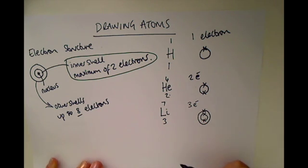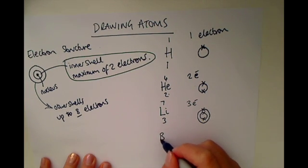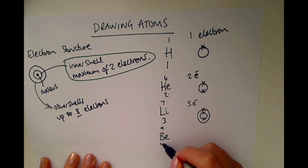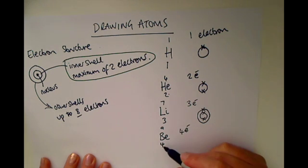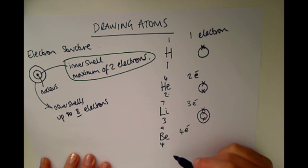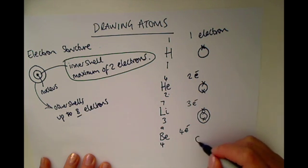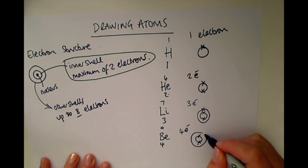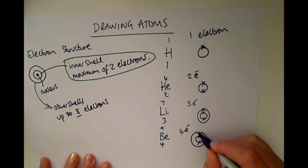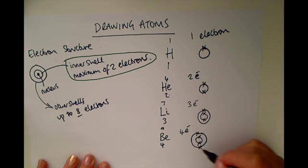If we draw the next atom up, we'd have beryllium. Beryllium is the next atom along the periodic table. It's got four electrons — we can tell that by the proton number, which is also the same number of electrons. We draw two on the inner shell and then draw the extra two on the outer shell.